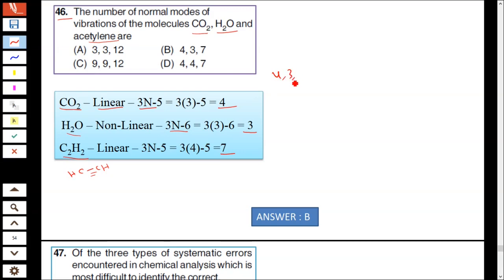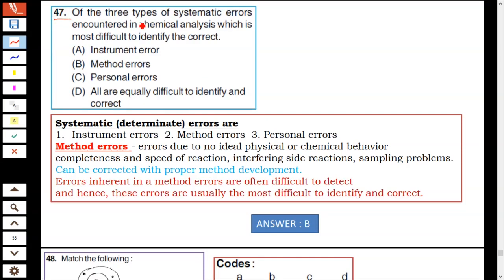Question 47: Of the three types of systematic errors encountered in chemical analysis, which is most difficult to identify and correct? Instrumental error, methodic error, personal error, or all are equal? Methodic errors are due to non-ideal physical or chemical behavior, incompleteness and speed of reaction, interfering side reactions, sampling problems. Can be corrected with proper method development.